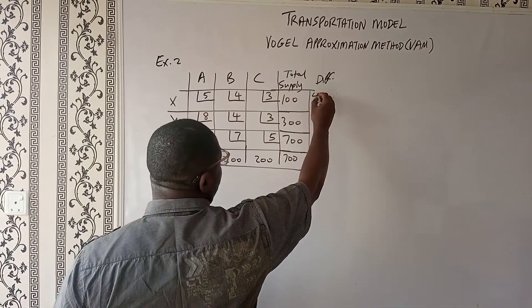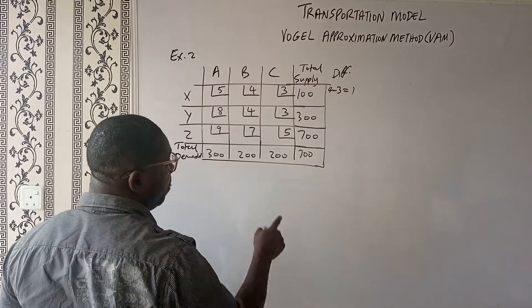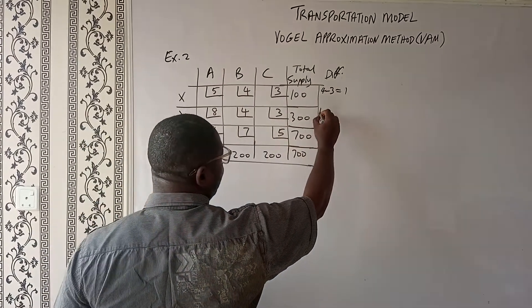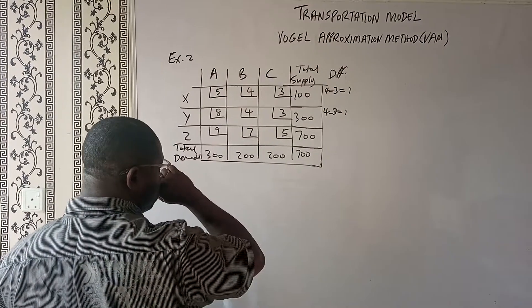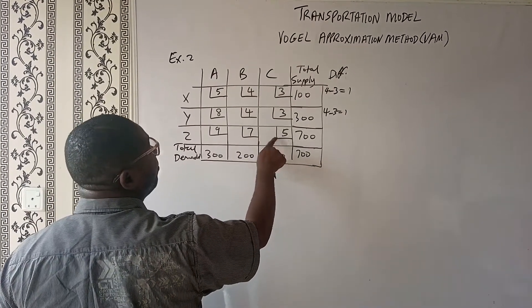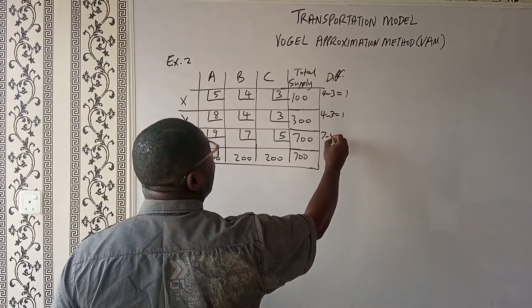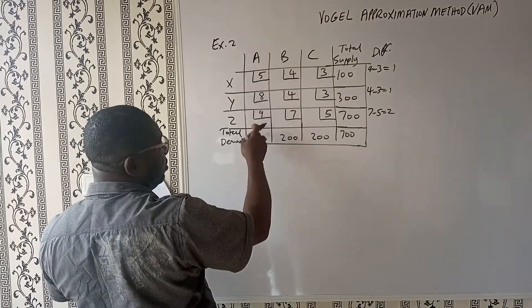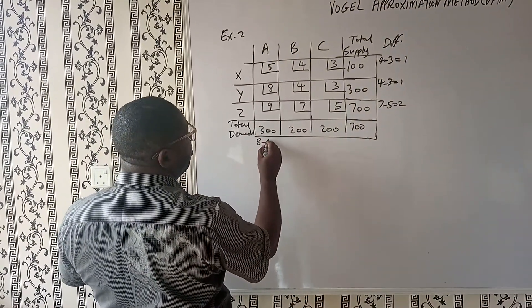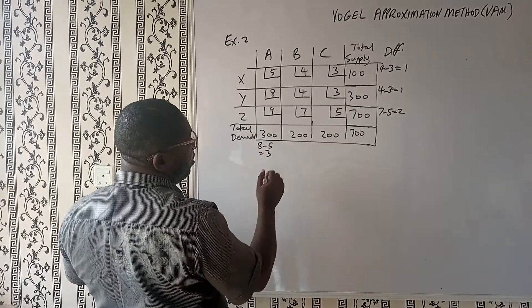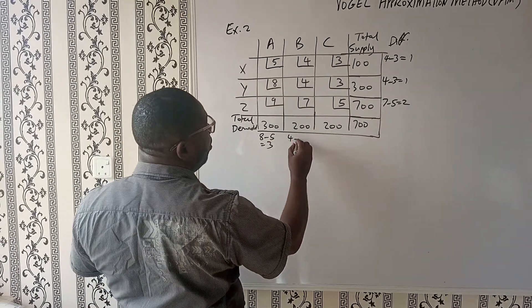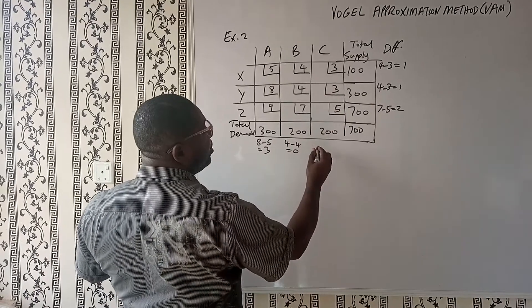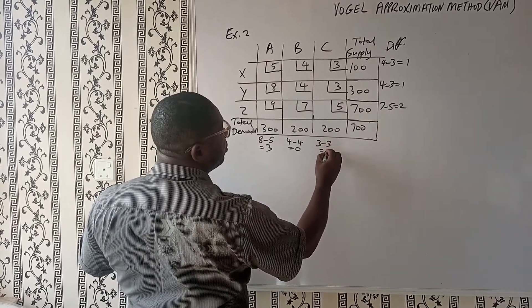This one is also 4 minus 3, so 4 minus 3 gives us 1. How about here? We have 5 and 7, so this will be 7 minus 5, which gives us 2. Let's go to the column. Here we have 5 and 8, so this will be 8 minus 5, that gives us 3. This is 4 and 4, so 4 minus 4 gives us 0. And then we have 3 and 3, so 3 minus 3 gives us 0.